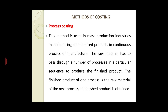Process costing: this method is used in mass production industries manufacturing standardized products through a continuous process of manufacturing. The product has to pass through a number of processes in a particular sequence to produce the final product. The finished product of one process becomes the raw material of the next process until the finished product is obtained.